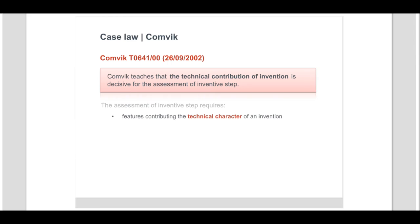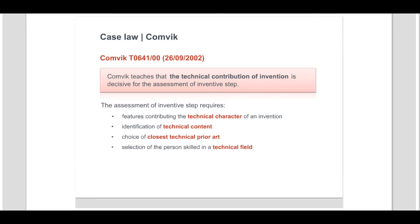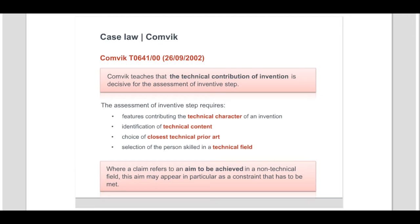Features that do not contribute to the technical character of an invention cannot support the presence of inventive step. For example, distributing costs according to a claimed kind of cost attributing scheme is rather a financial and administrative concept, which as such does not require the exercise of any technical skill and does not, on the administrative level, involve a solution to a technical problem. The assessment of inventive step requires the identification of the technical content of the claimed subject matter, the choice of the closest technical prior art, and the selection of the person skilled in a technical field who is to be faced with a realistic objective technical problem. Where a claim refers to an aim to be achieved in a non-technical field, such as to distribute costs according to an administrative scheme, this aim may legitimately appear in the formulation of the problem as part of the framework of the technical problem that is to be solved, in particular as a constraint that has to be met.